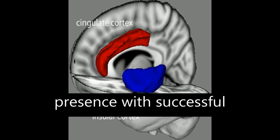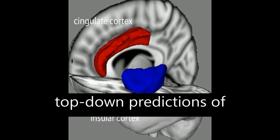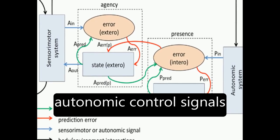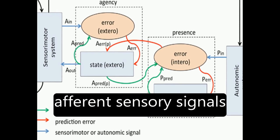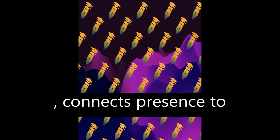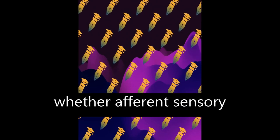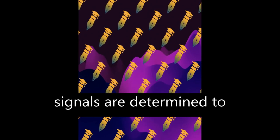The model associates presence with successful top-down predictions of informative interoceptive signals evoked by autonomic control signals and visceral responses to afferent sensory signals, connects presence to agency by allowing that predicted interoceptive signals will depend on whether afferent sensory signals are determined to be self-generated or externally caused.